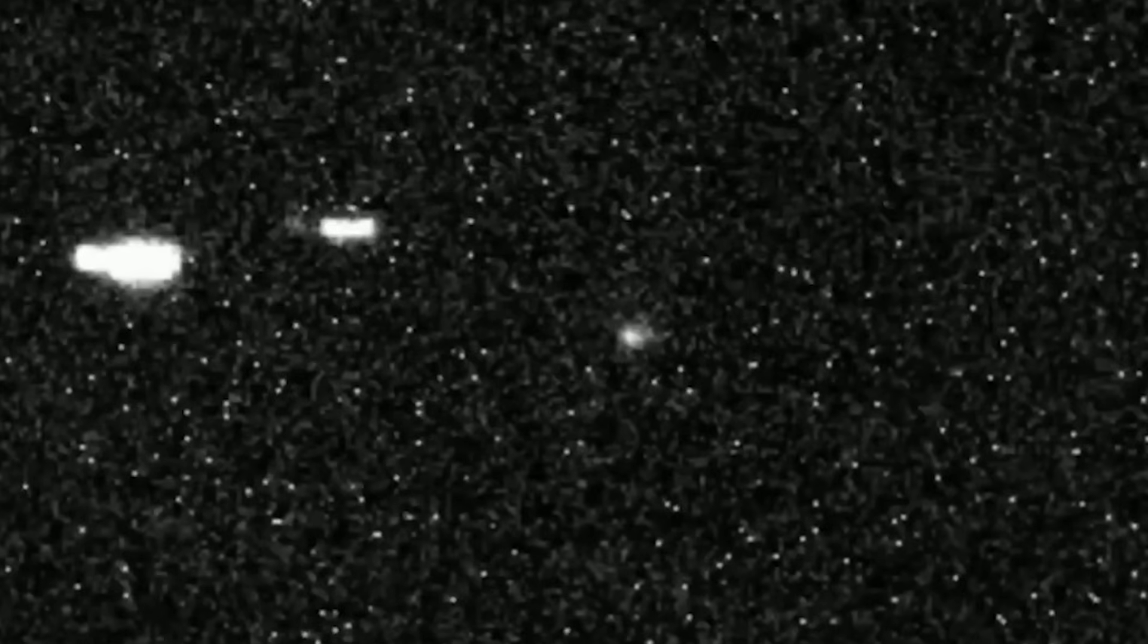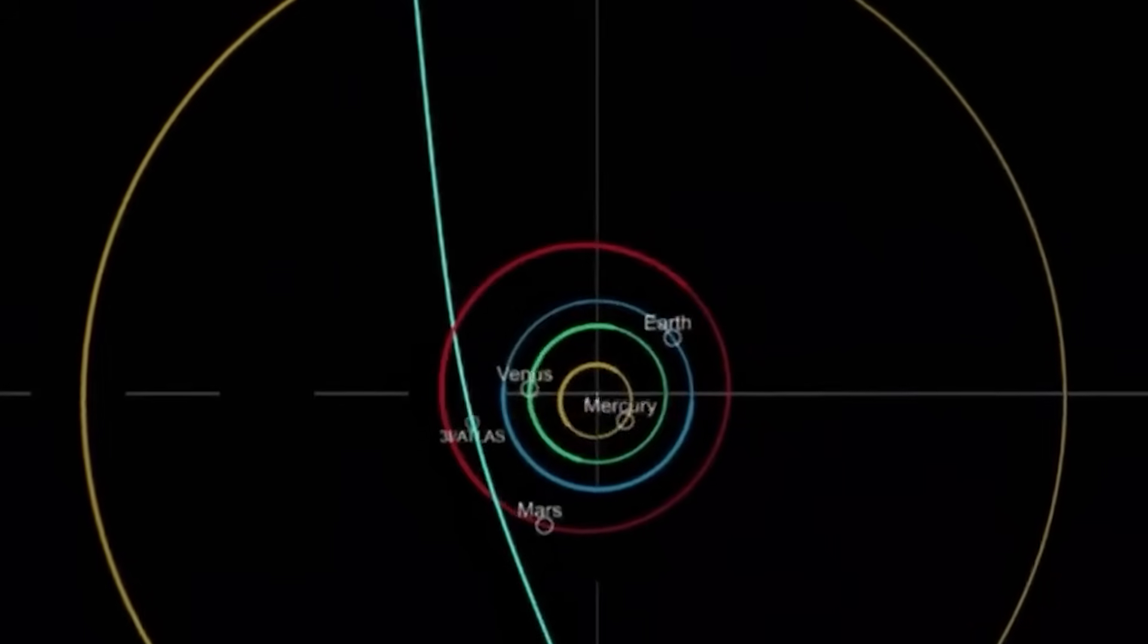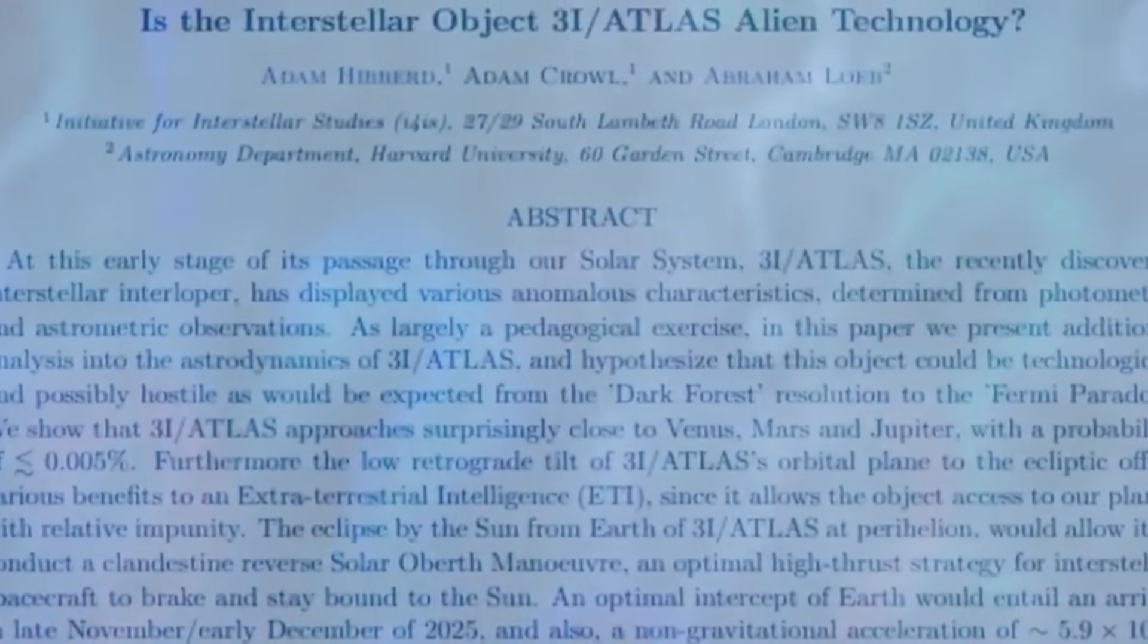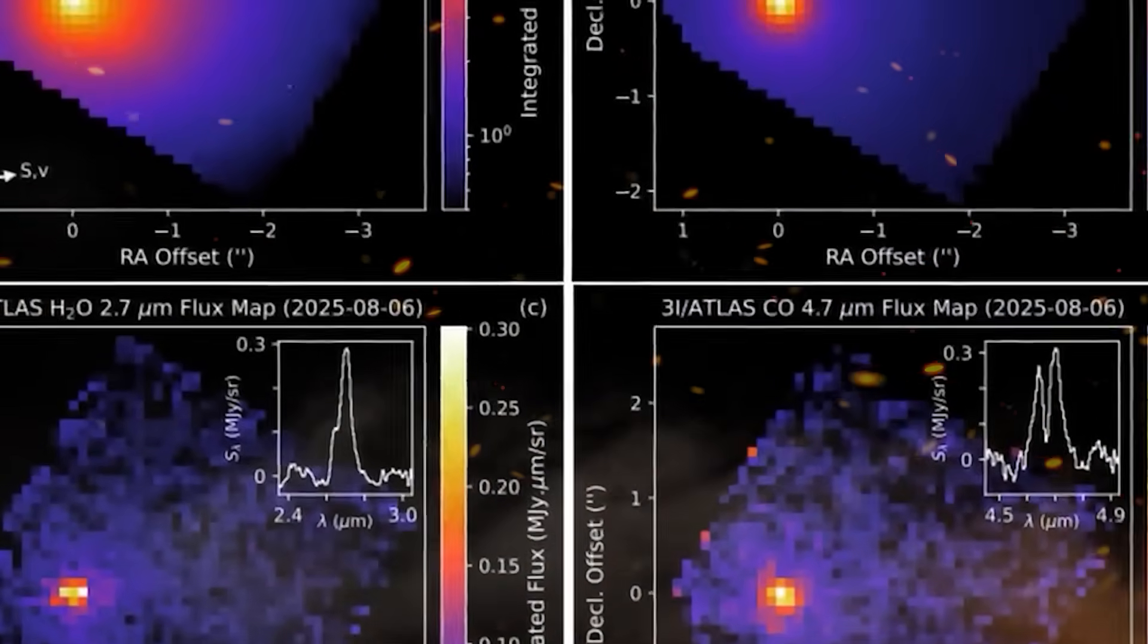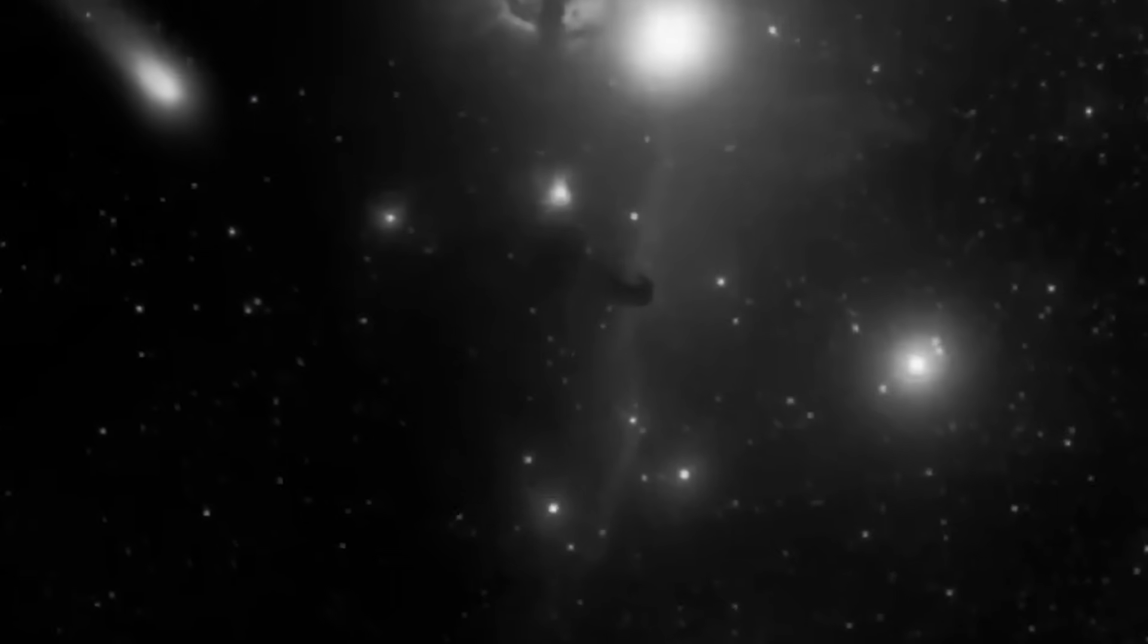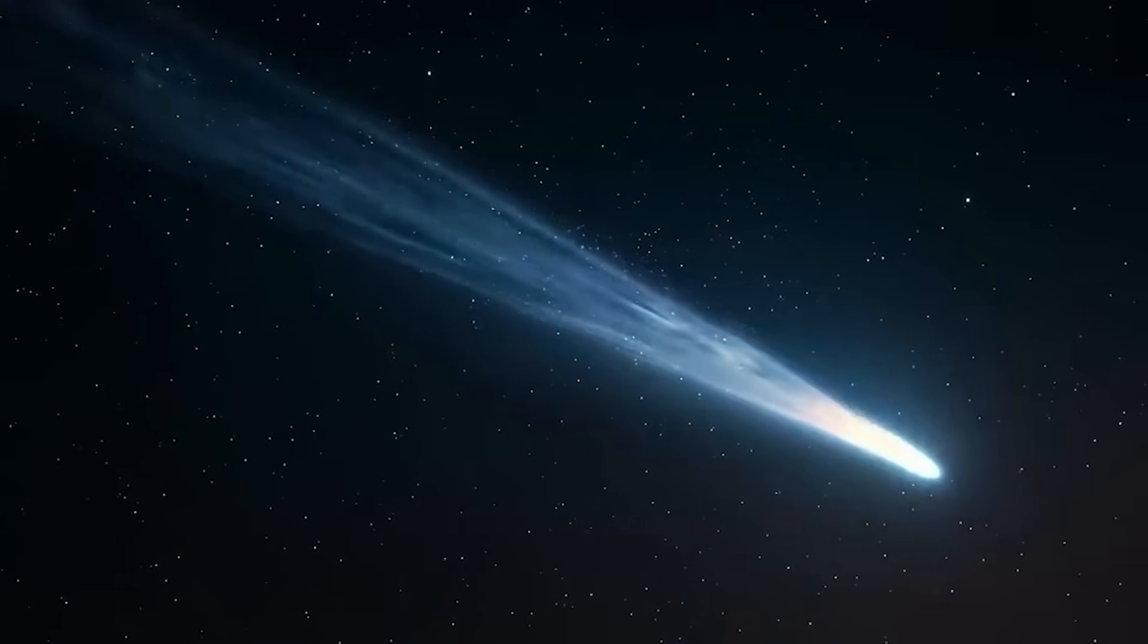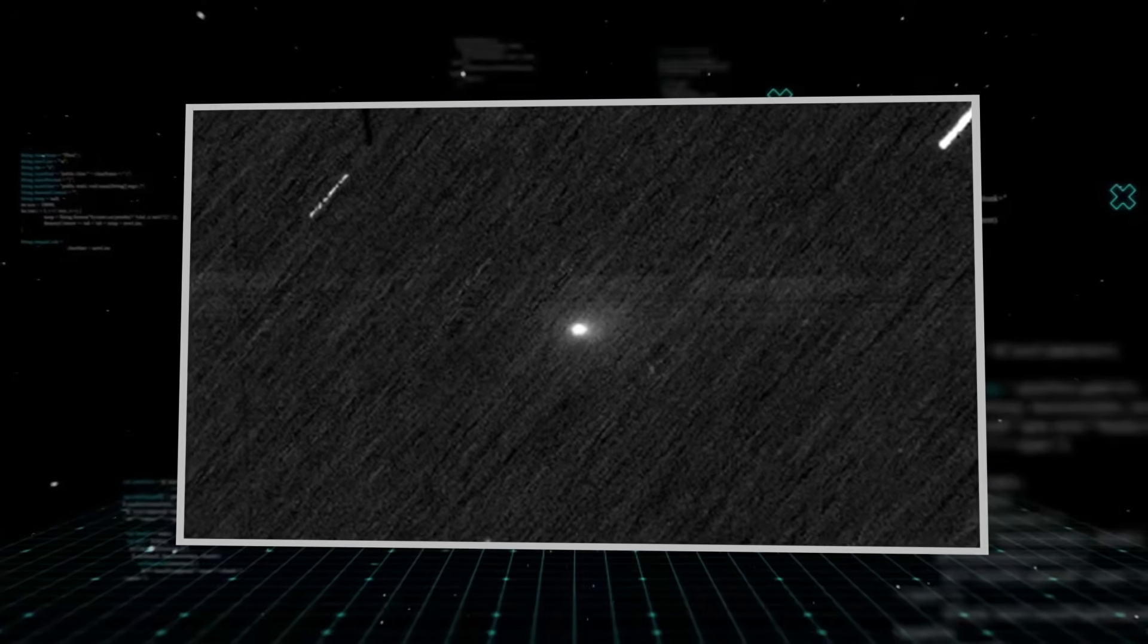Webb has recorded subtle changes in its reflective surface. Shifts in patterning that suggest self-reconfiguration like a machine adjusting itself, adapting, preparing. And here's the most terrifying development. As of the latest readings, Three-Eye Atlas has begun emitting a secondary signal. Lower frequency, longer pulses, and it's pointed toward deep space, not Earth. It's broadcasting outward. Some say it's calling for reinforcements. Others believe it's reporting back. But either way, one thing is now undeniable. This was never just an interstellar rock. This was a node, a probe, a messenger.